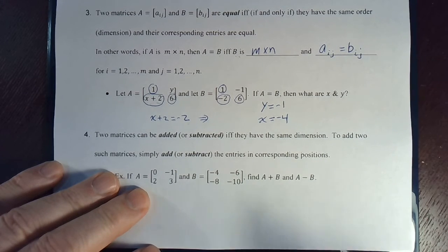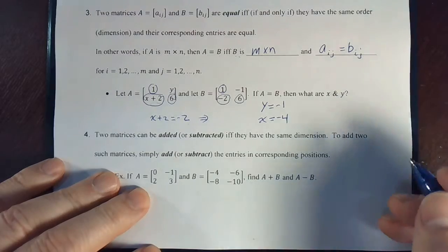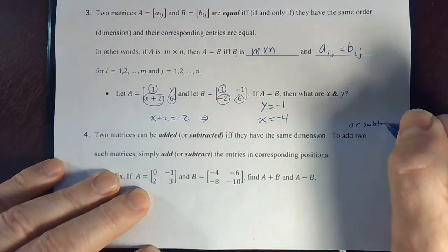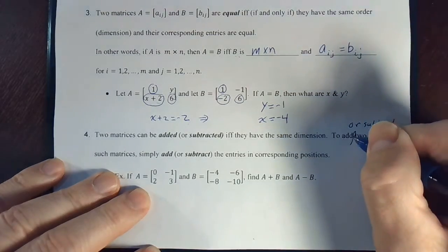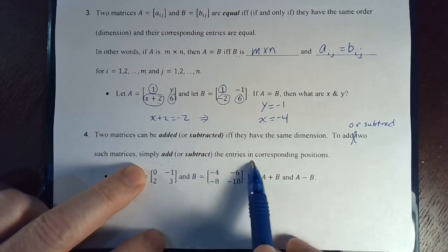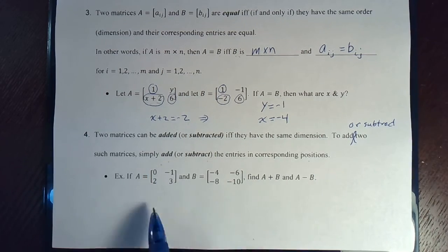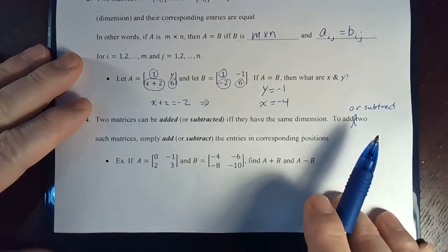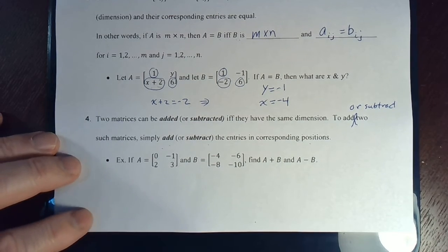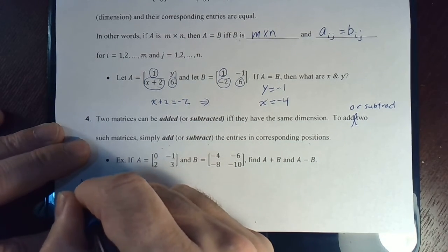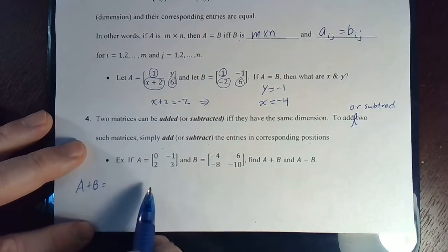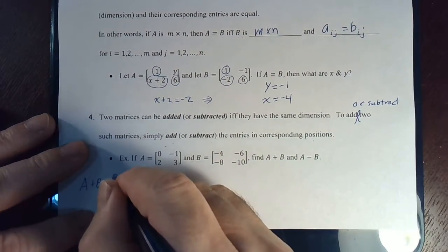And to add two matrices together, you simply add or subtract the entries in the corresponding positions. So, to add or subtract two matrices, simply add or subtract the entries in the corresponding positions. So, let's compute, given A and B here, let's compute A plus B and A minus B.